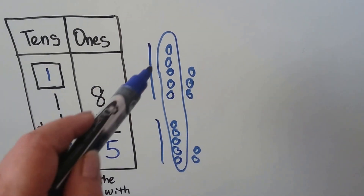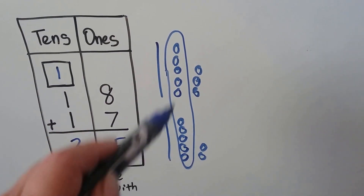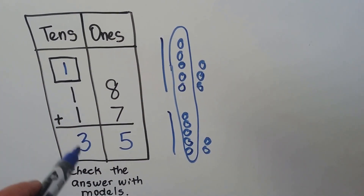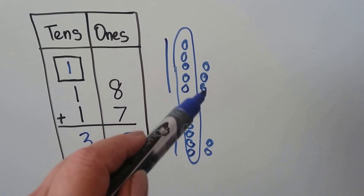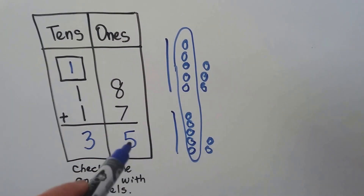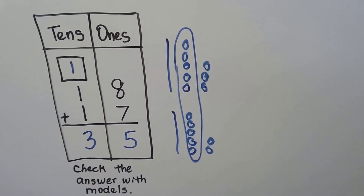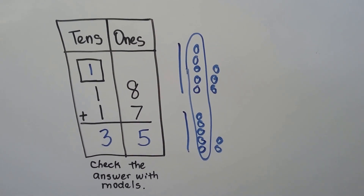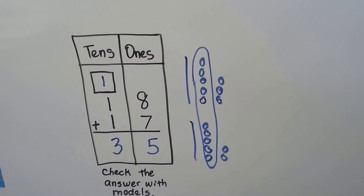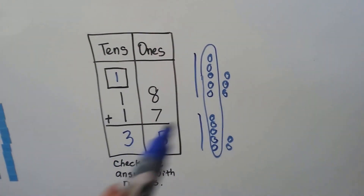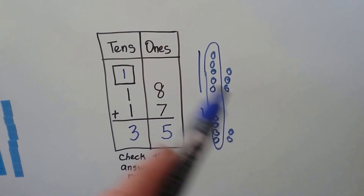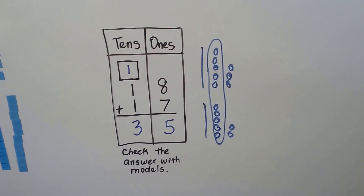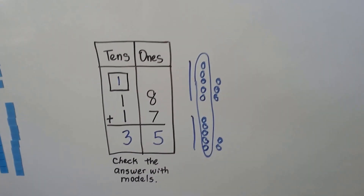And we have 1, 2, 3 tens. That's what we got. And 3, 4, 5 ones. So we did it right. So we can use the models to help us add, but we can also use the models to help us check our addition.